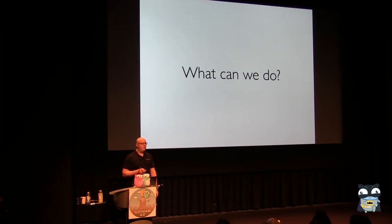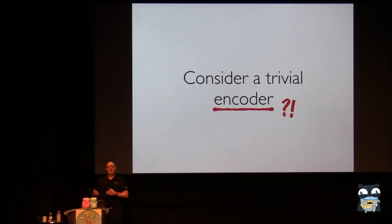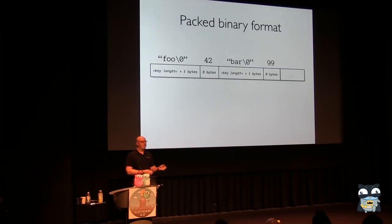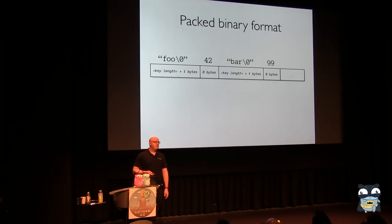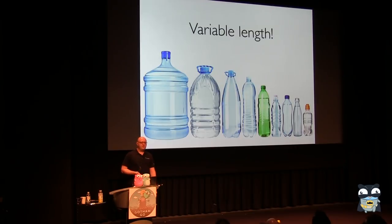So what can we do? To illustrate this, I want to consider a very trivial encoder. I work at MongoDB, where we take user data and pass it to the database using a format called BSON — kind of like binary JSON. We do a lot of marshalling and unmarshalling, so we care a lot about performance. For today's encoder, I'll make it really simple: string keys and integer values, packed into a naive binary format of C strings — null-terminated strings — and some bytes for an integer, giving us variable-length data.